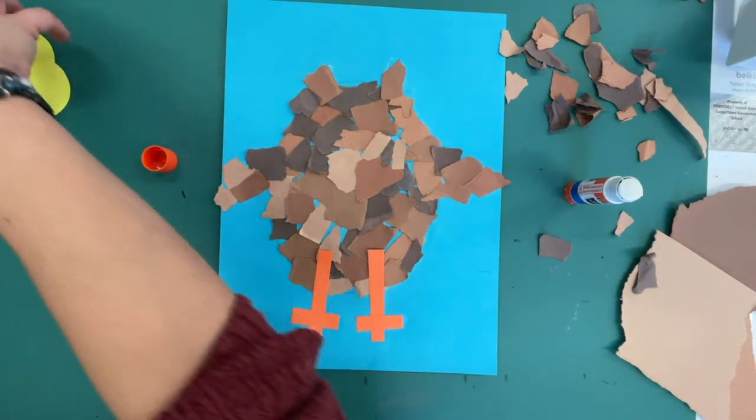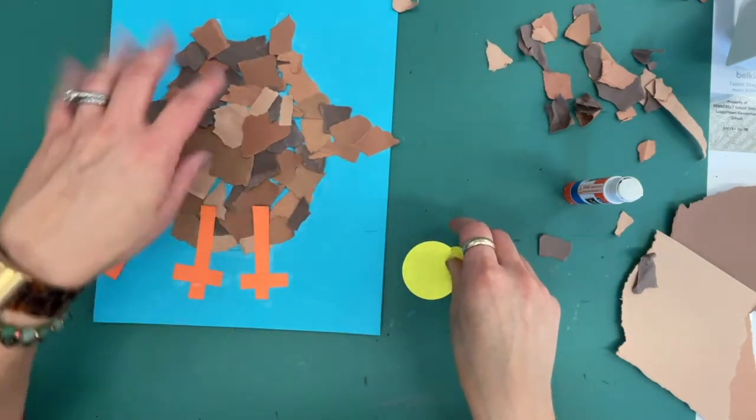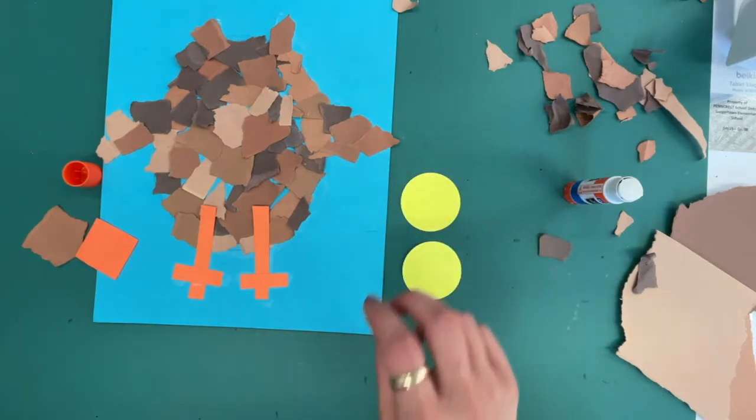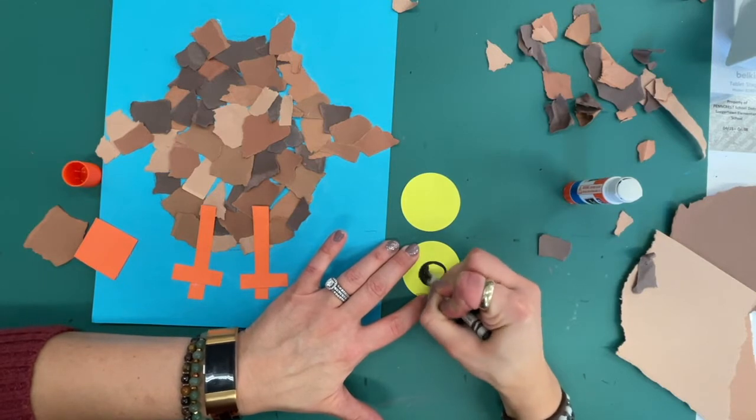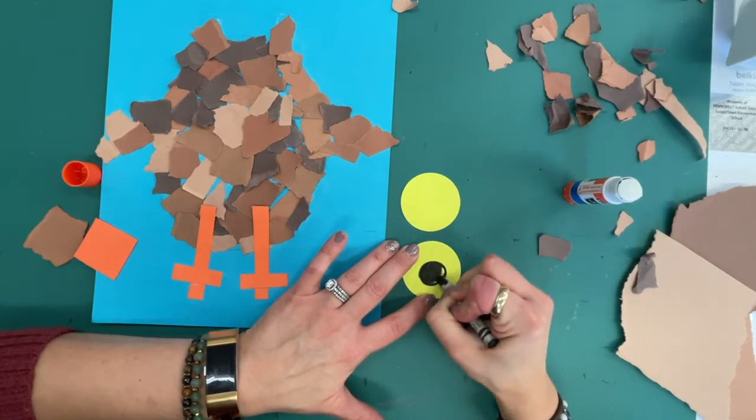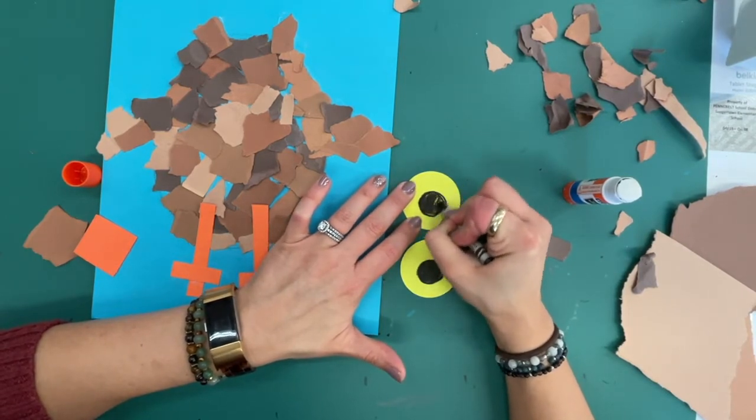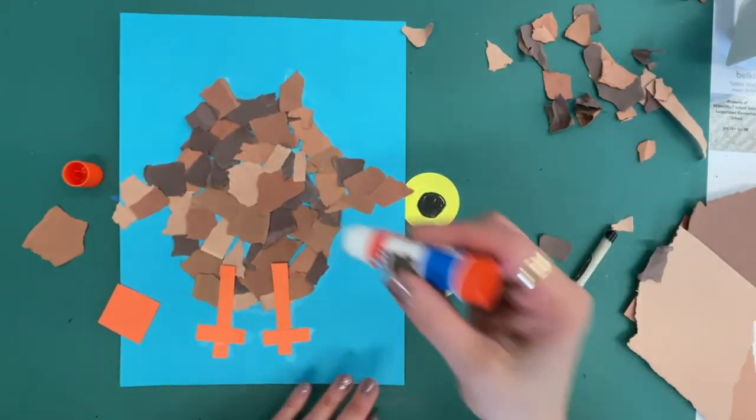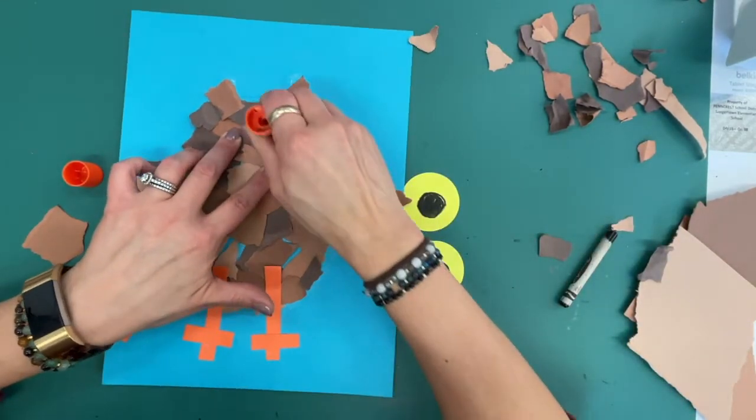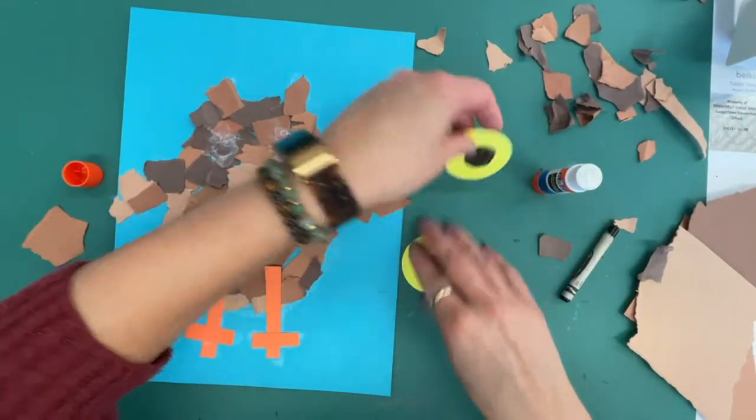Let's give them some eyes. I'm going to take my yellow circles and I'm not going to glue them down yet. I'm going to put the black, I'm going to draw another circle, so this is the pupil and I'm going to color that in real nice. All right and I'm going to put lots of glue right here and lots of glue right here for my owl eyes.